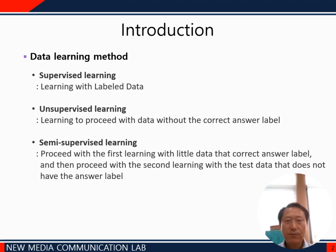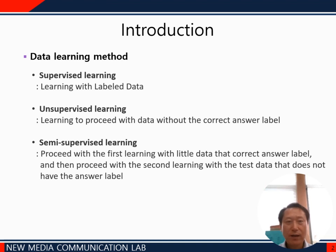Data learning is largely divided into three types. First, supervised learning is the most common way to learn using labelled data that are already available. The second is unsupervised learning — a way of combining and recognizing data without any correct answer label, which is currently low in accuracy but continues to be active.